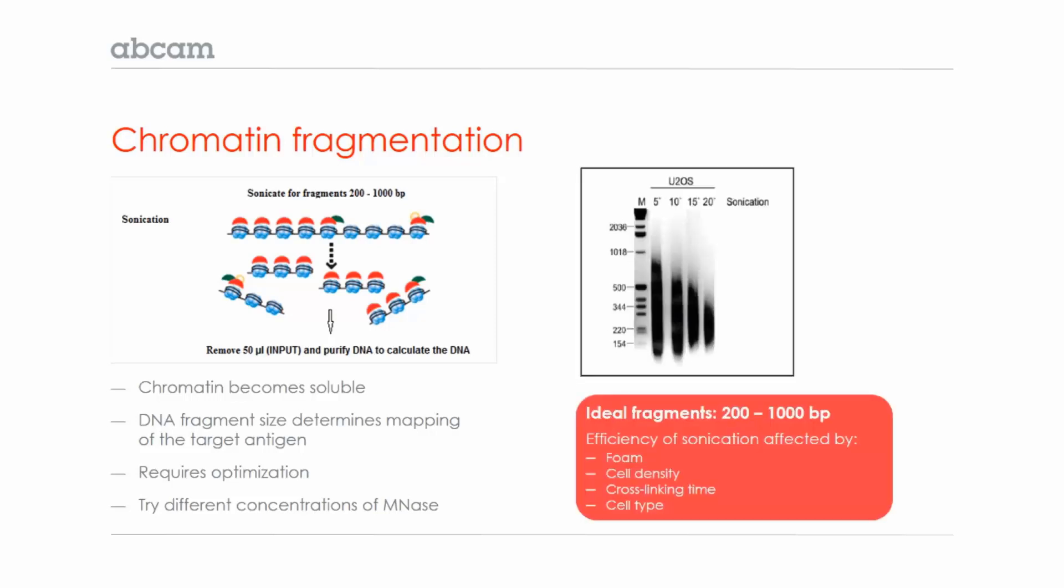After sonication or enzymatic digestion, you should remove some chromatin, reverse the cross-links, and purify the DNA to run in a gel alongside a DNA ladder, as shown in this figure, to determine what condition gives you the most appropriate sized fragments.